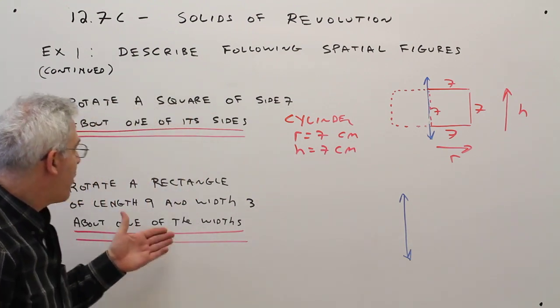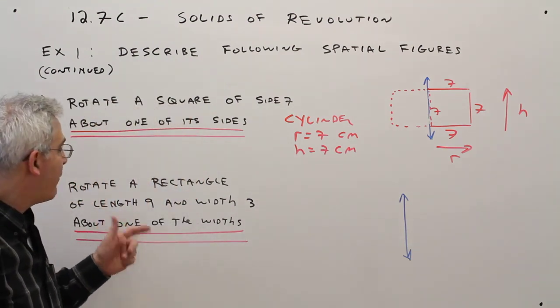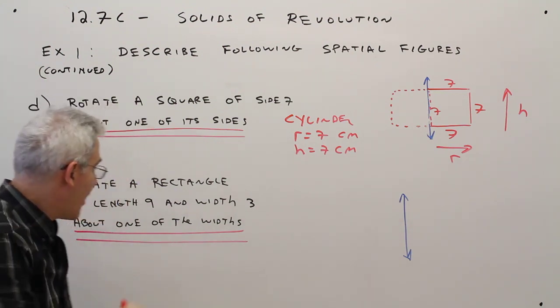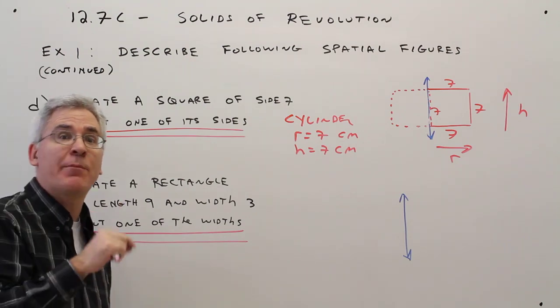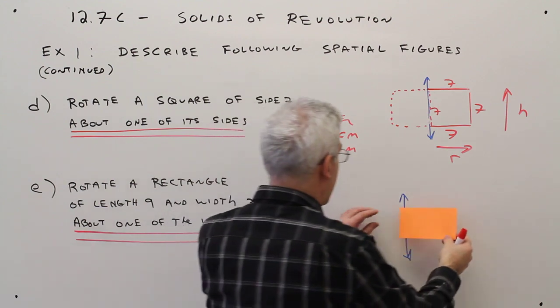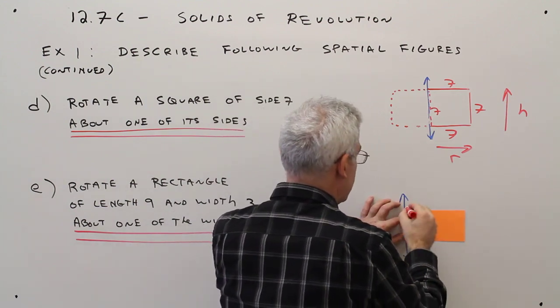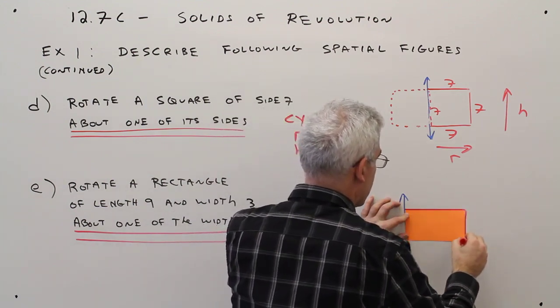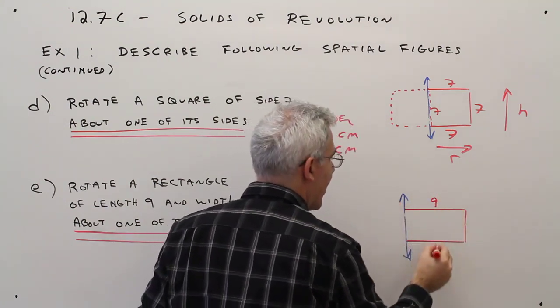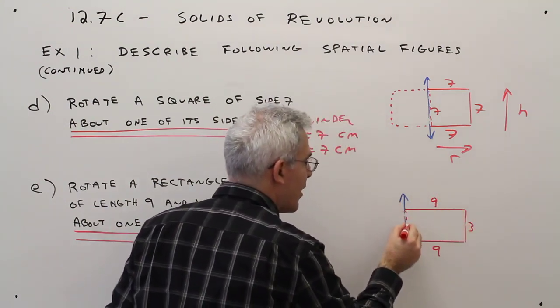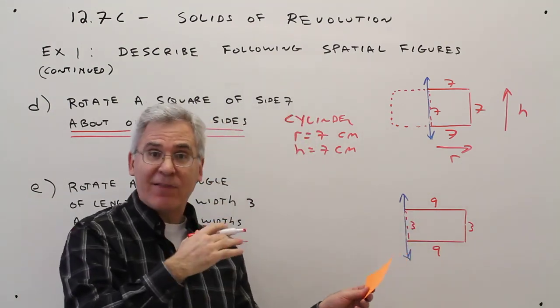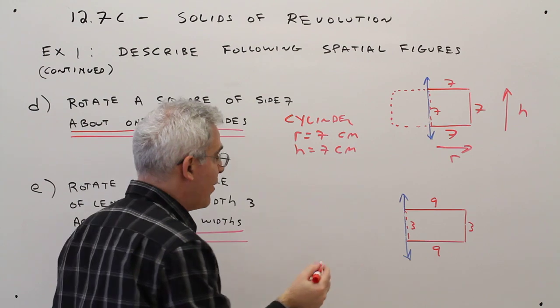The second problem, rotate a rectangle of length 9 and width 3 about one of the widths. And I think it's important that you know you're rotating about one of the widths. That changes the whole problem. So here's a cut out of a possible rectangle. So I'll say it's 9, 9, 3, 3. And the first thing I like to do is actually reflect that about the line of rotation.